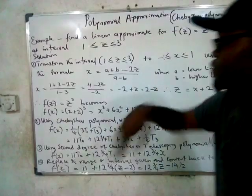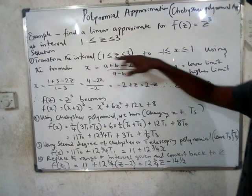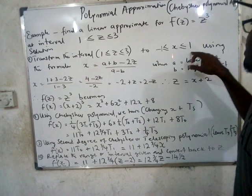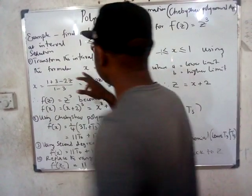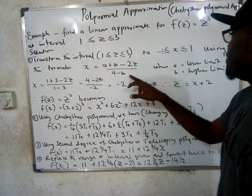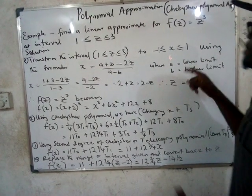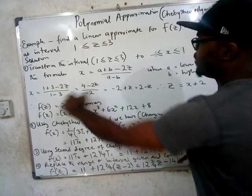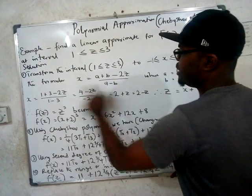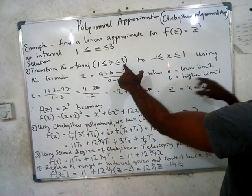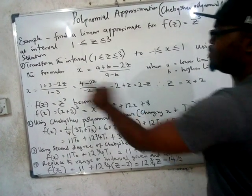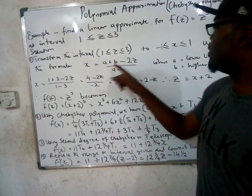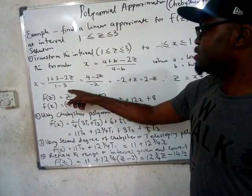Number one: transform the interval to x, and it has to be from minus one to one. You use this formula: x = (a + b − 2z) / (a − b), where a is the lower limit and b is the upper limit. Looking at the interval given, the lower limit is one, so anywhere we see a we put one. The upper limit is three, so anywhere we see b we put three.